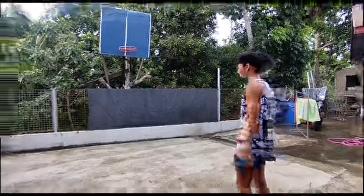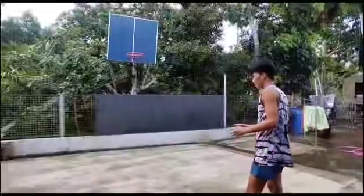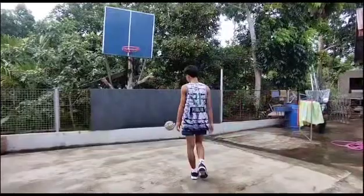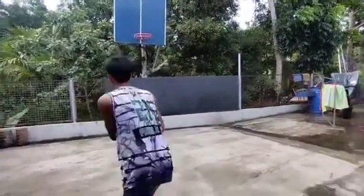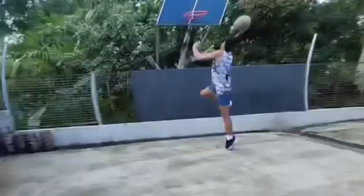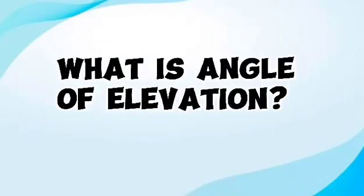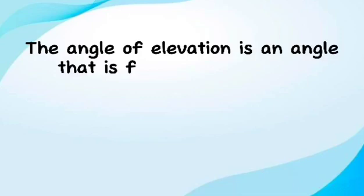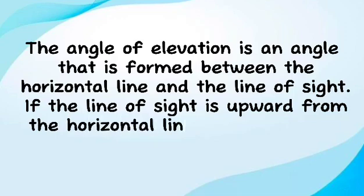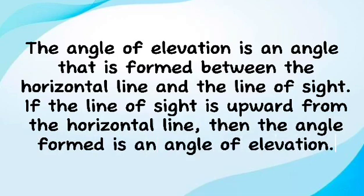Angle of elevation. The angle of elevation is an angle that is formed between the horizontal line and the line of sight. If the line of sight is upward from the horizontal line, then the angle formed is an angle of elevation.